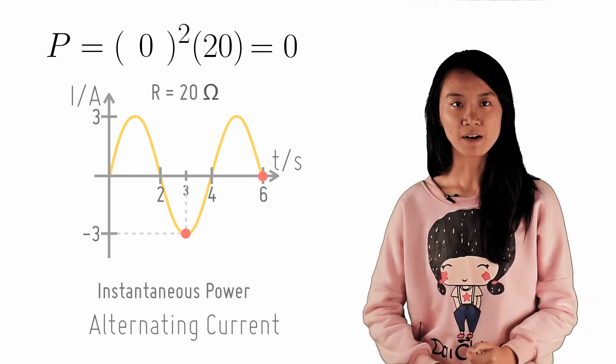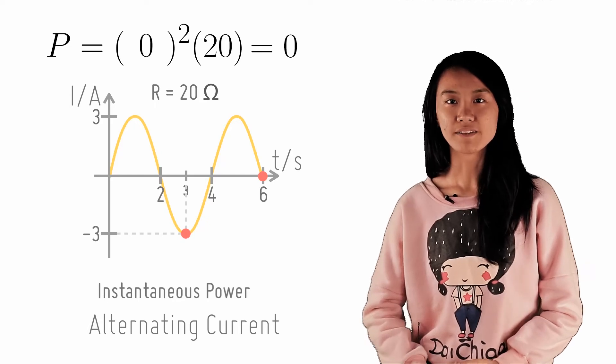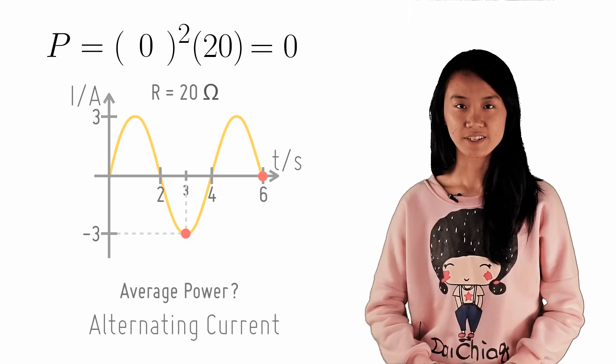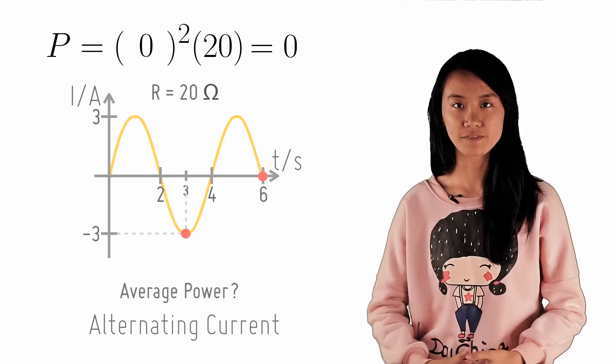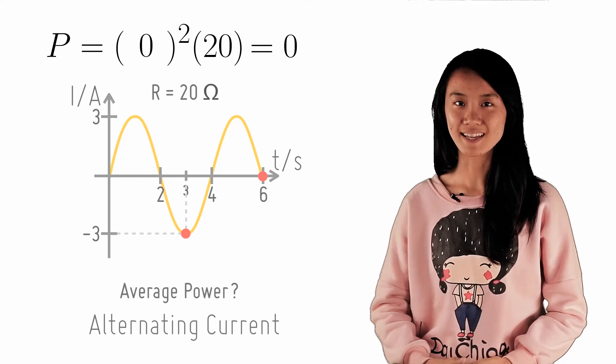Now you know how to find the instantaneous power of an AC. What about the average power? To find the average power, we have to first find the root mean square values of the current or voltage. So watch the next few chat points to find out what they are.